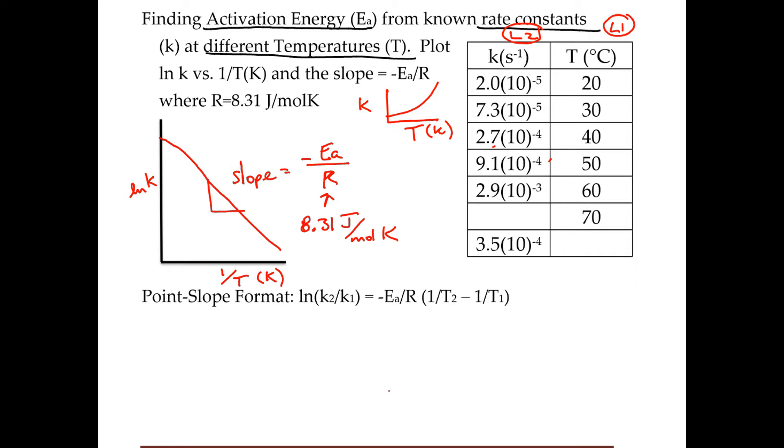So you're going to want to make your list 3 is going to be your new x, and in this case, it's going to be 1 divided by parentheses list 1 plus 273 because you have to change it to Kelvin.